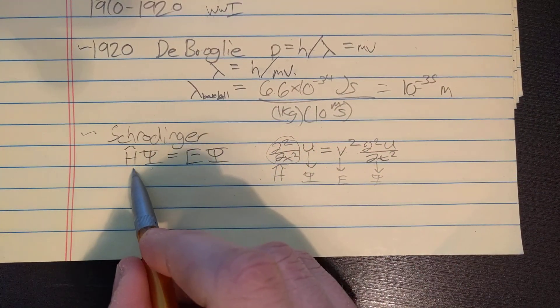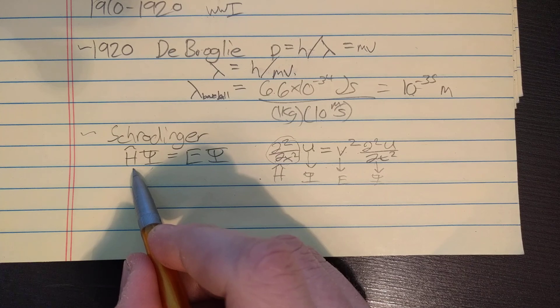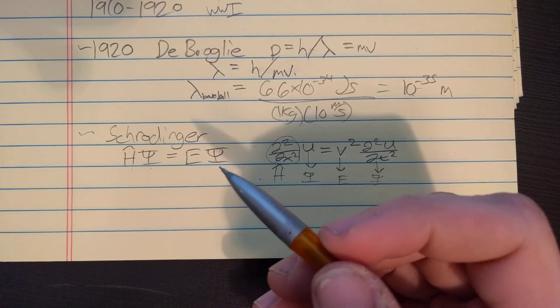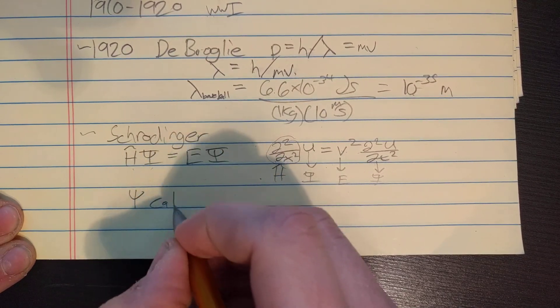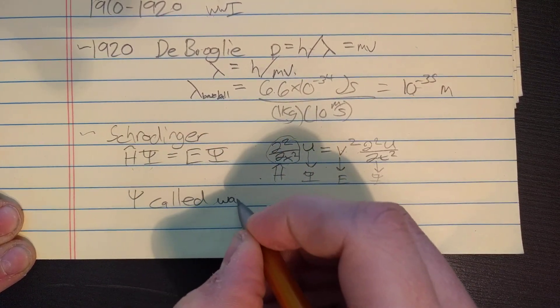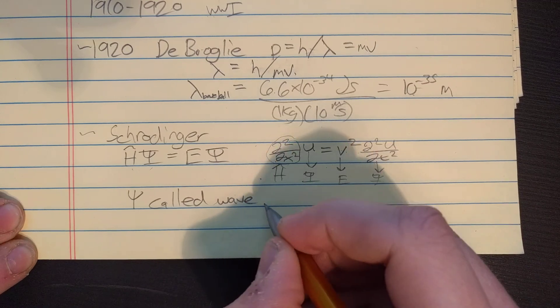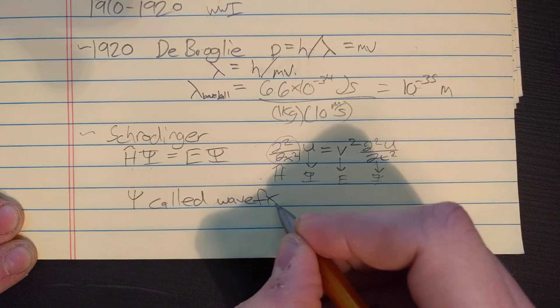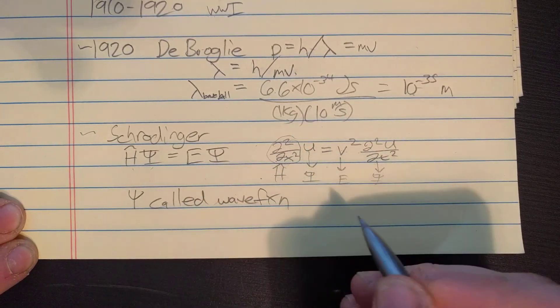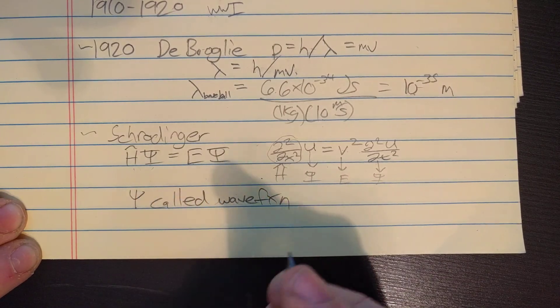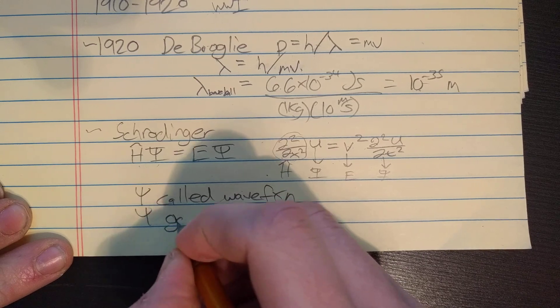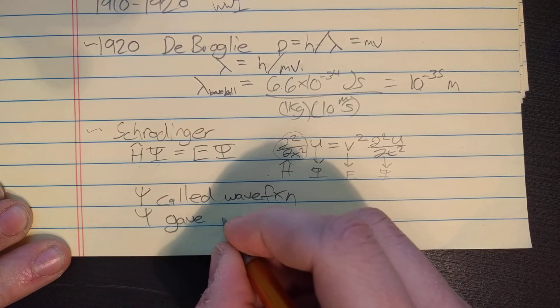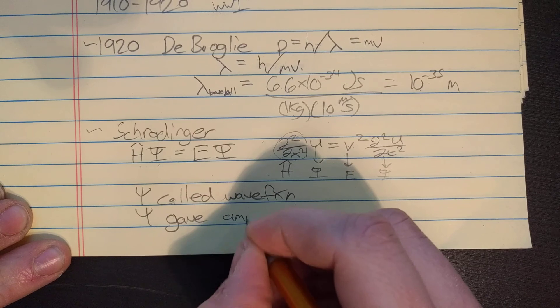This equation is now known as the Schrodinger equation. This thing called psi was called the wave function, and particles were now thought of as having a wave function, or photons were thought of as having a wave function. This wave function gave you the height of a wave or the amplitude.